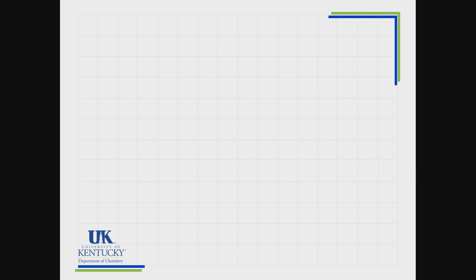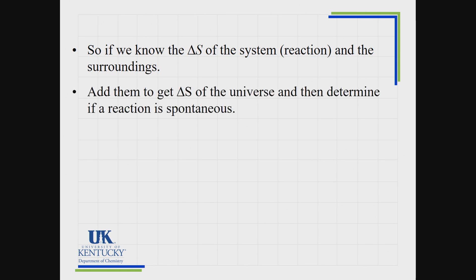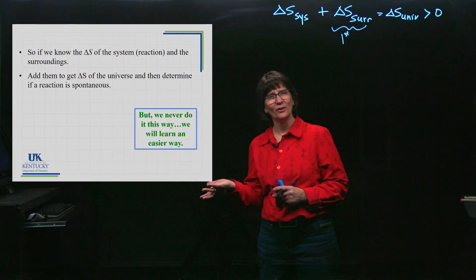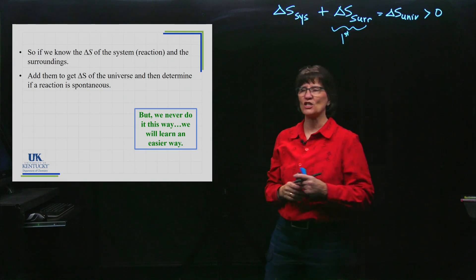If we know delta S of the system and delta S of the surroundings, we add them together. If the result is positive, delta S of the universe is positive and the process is spontaneous. If negative, the reverse reaction is spontaneous. We've learned how to calculate delta S of the surroundings; next we need to calculate delta S of the system.